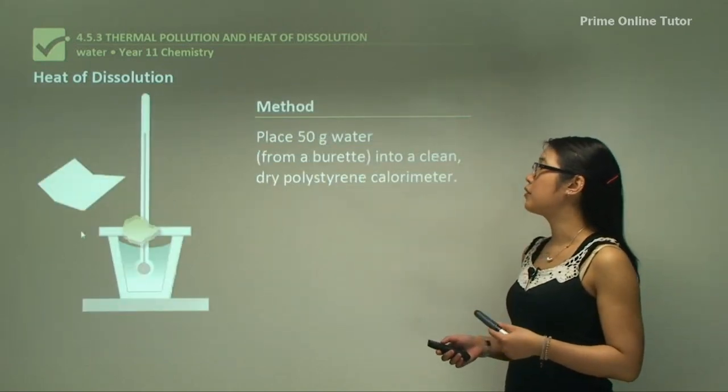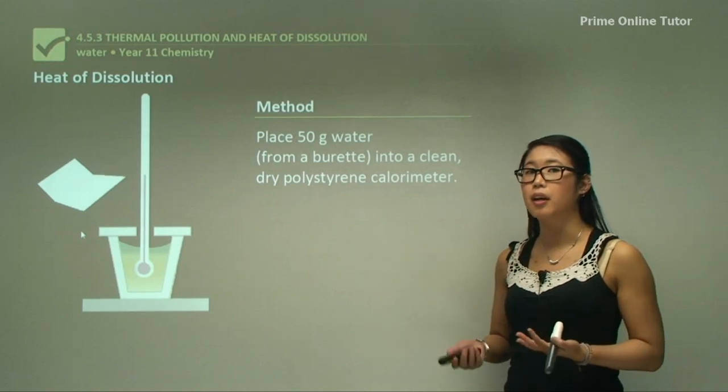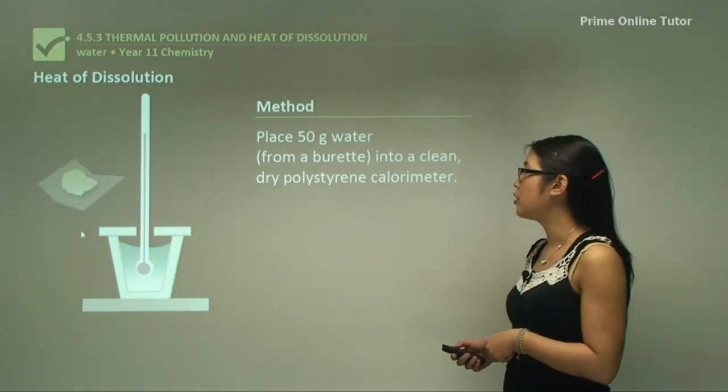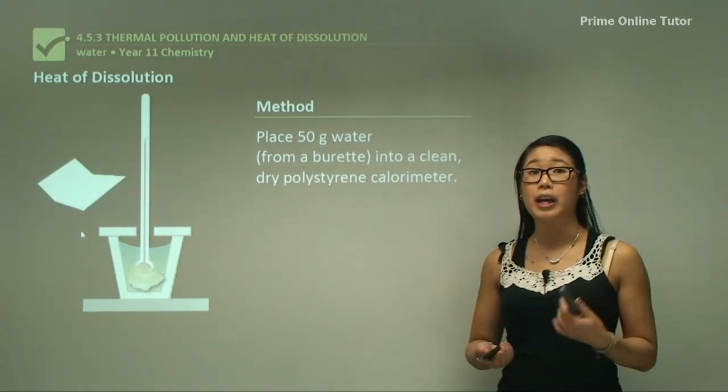First we need to place 50 grams of water from a burette—a burette makes it a lot more accurate—into a clean, dry polystyrene cup for our calorimeter.